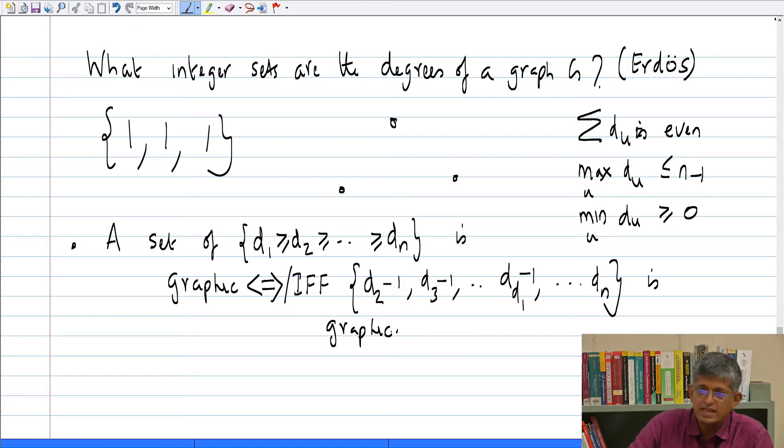It says that if somebody gives you these n degrees in a set, what you do is you visualize them first of all in non-decreasing order. And to check whether this fellow is graphic, you have to check if the n minus 1 element set, which consists of first of all d1 is thrown out, and the first d1 values after removing d1 are reduced by 1, and the rest of them are kept as it is. If this is graphic, then the original sequence is graphic.